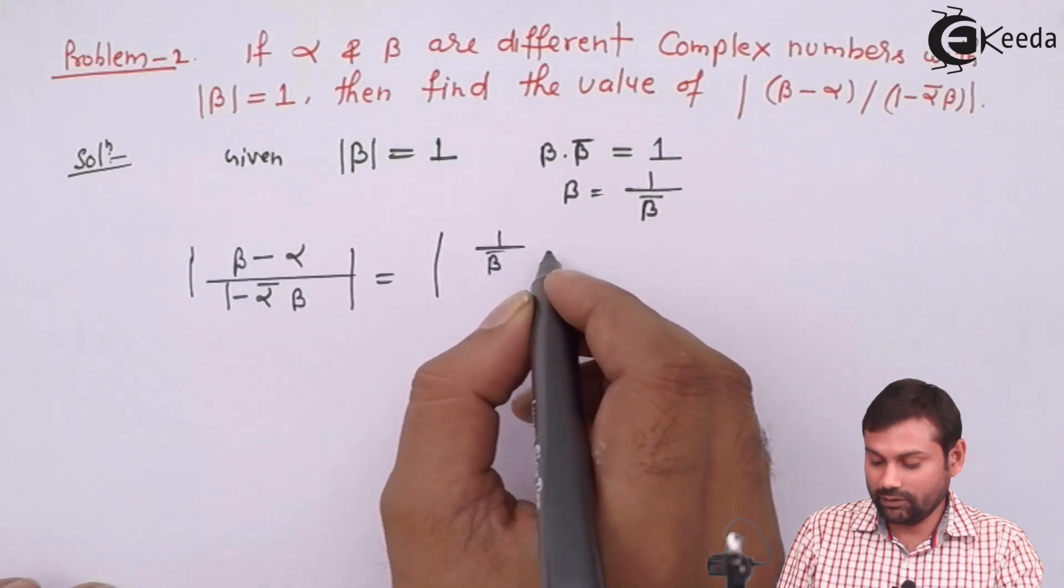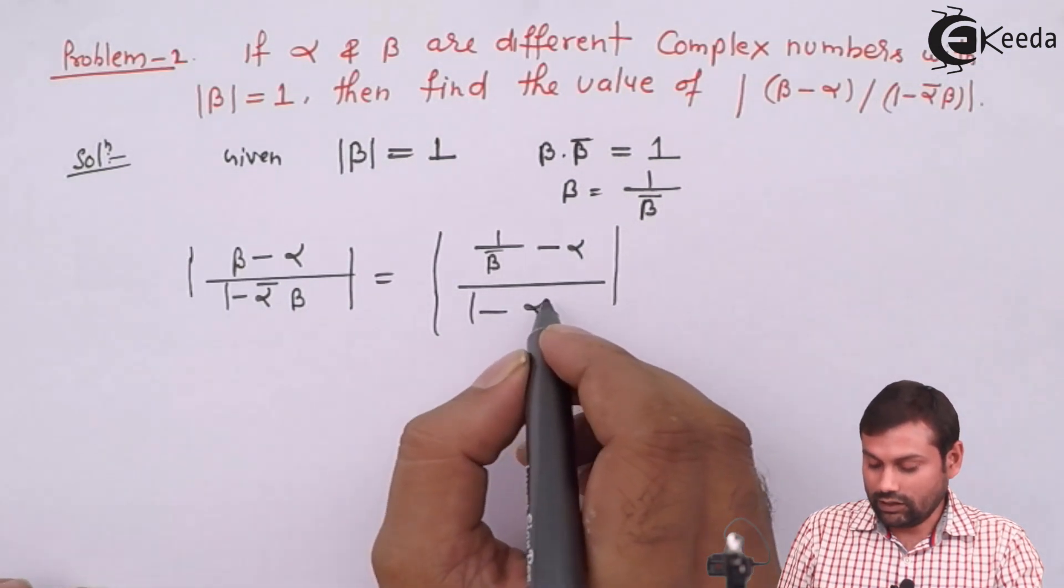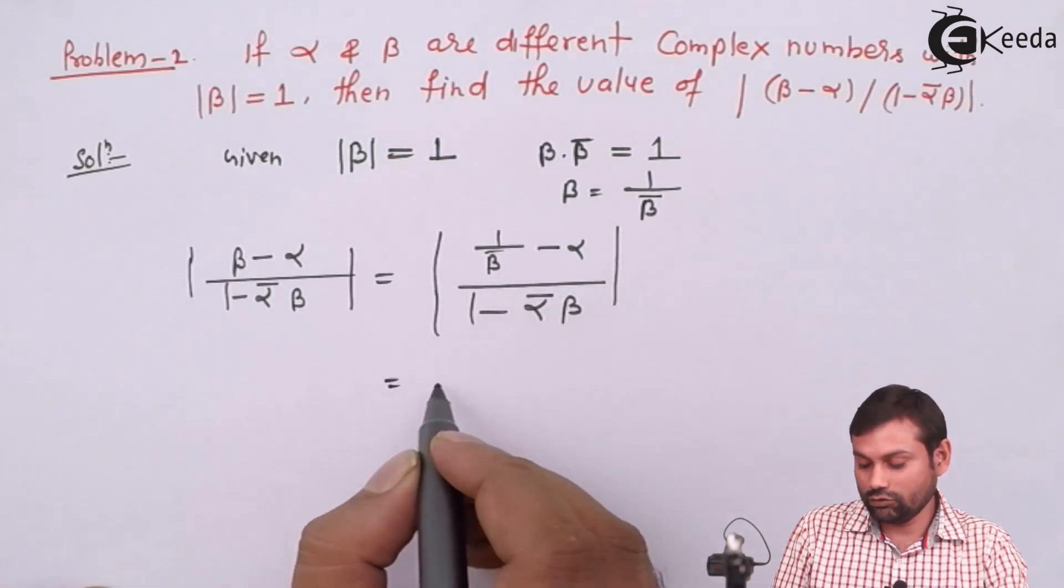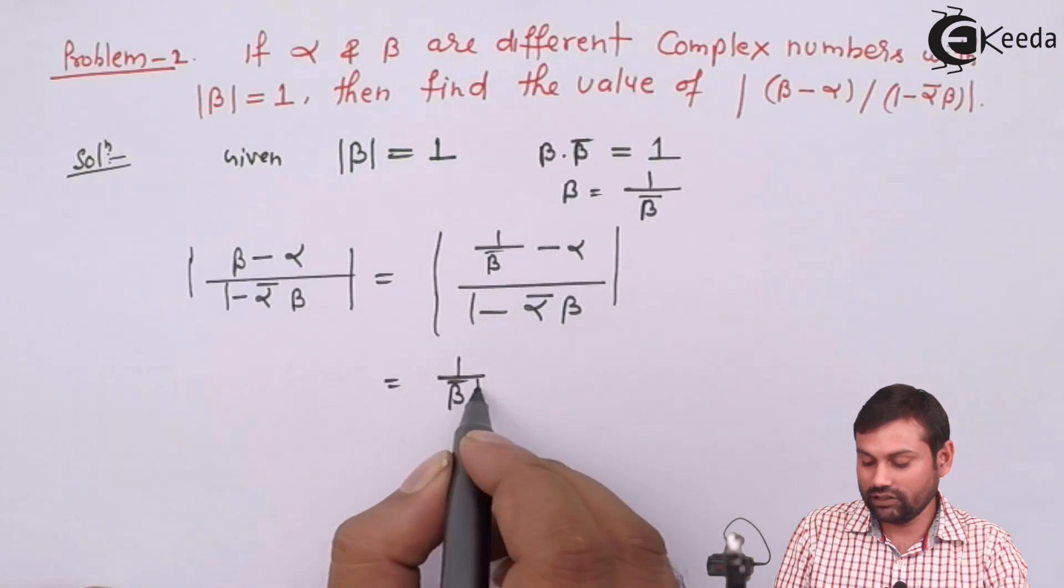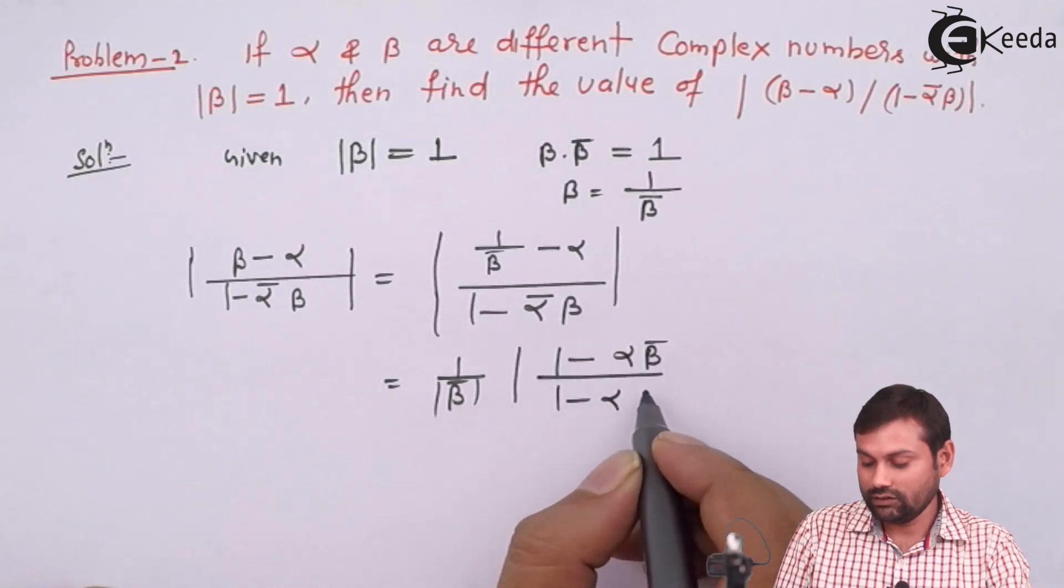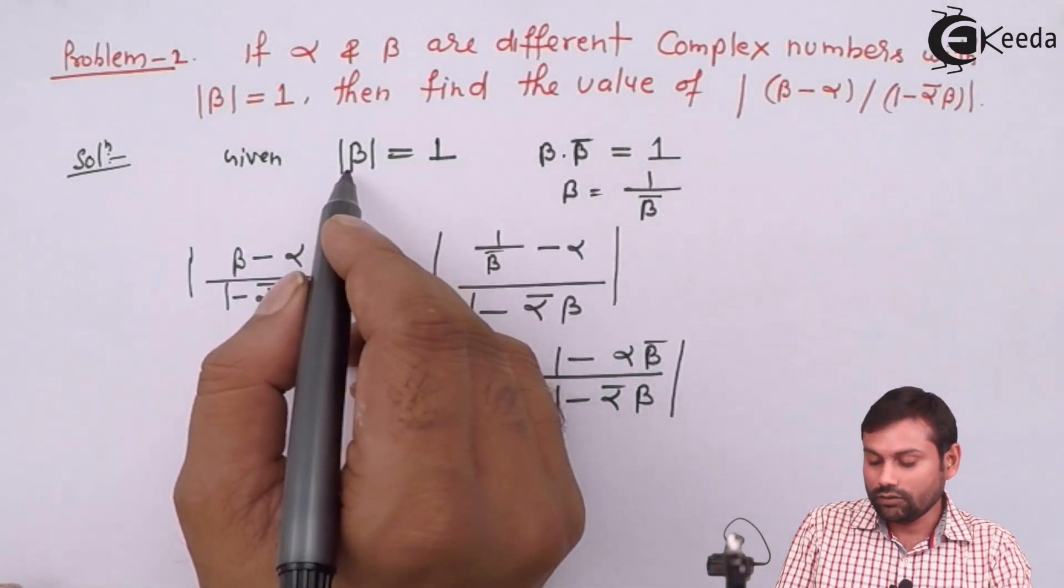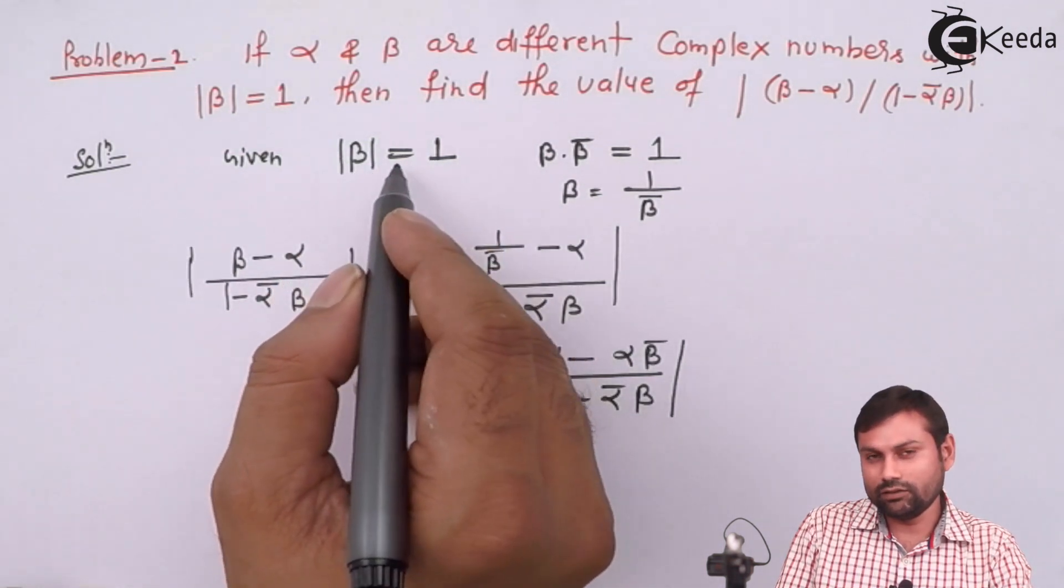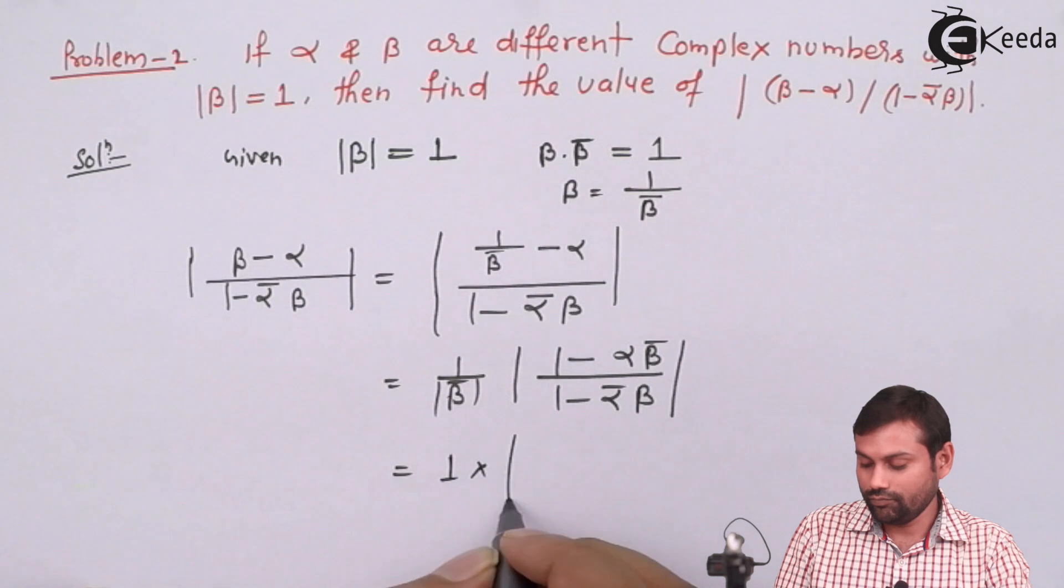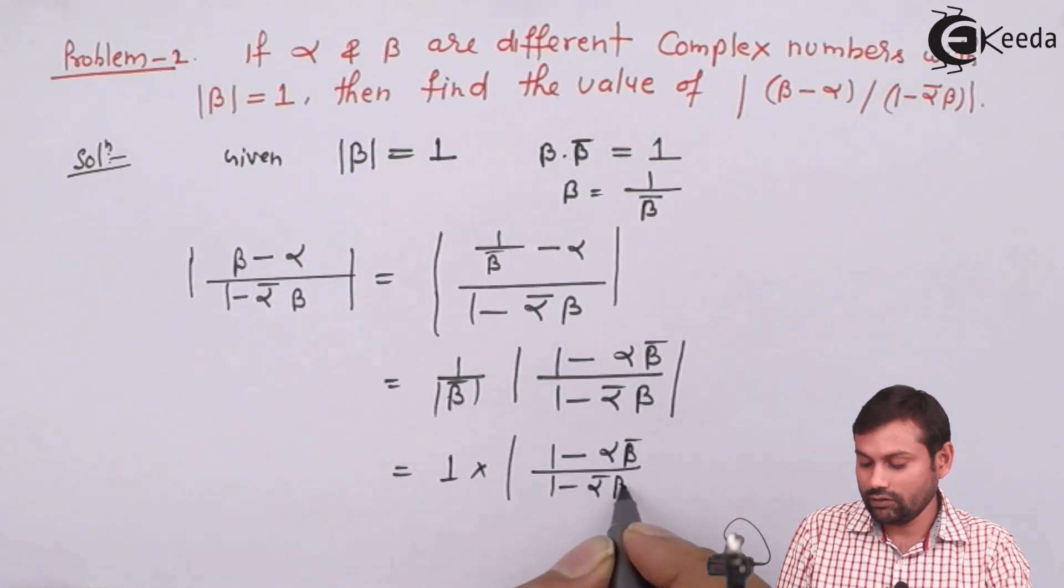This equals mod of (1/β̄ - α)/(1 - ᾱβ), which becomes mod of (1 - αβ̄)/(β̄(1 - ᾱβ)). If we take mod β̄ out, that equals 1, so we get 1 times mod of (1 - αβ̄)/(1 - ᾱβ).